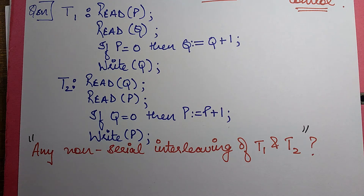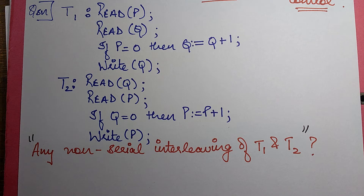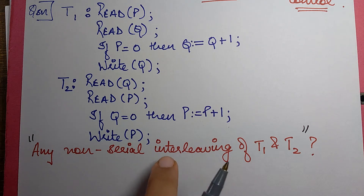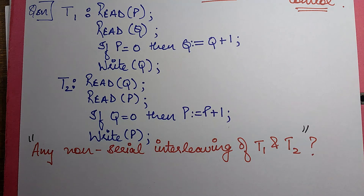Now knowing that I can disprove it for any one interleaved fashion means I can quickly just write one schedule with T1 and T2 operations written in parallel and check the condition. Because if it is false for one, I'm done, and I'll choose the answer accordingly — since the statement says it should hold for all, even one counterexample makes it false.